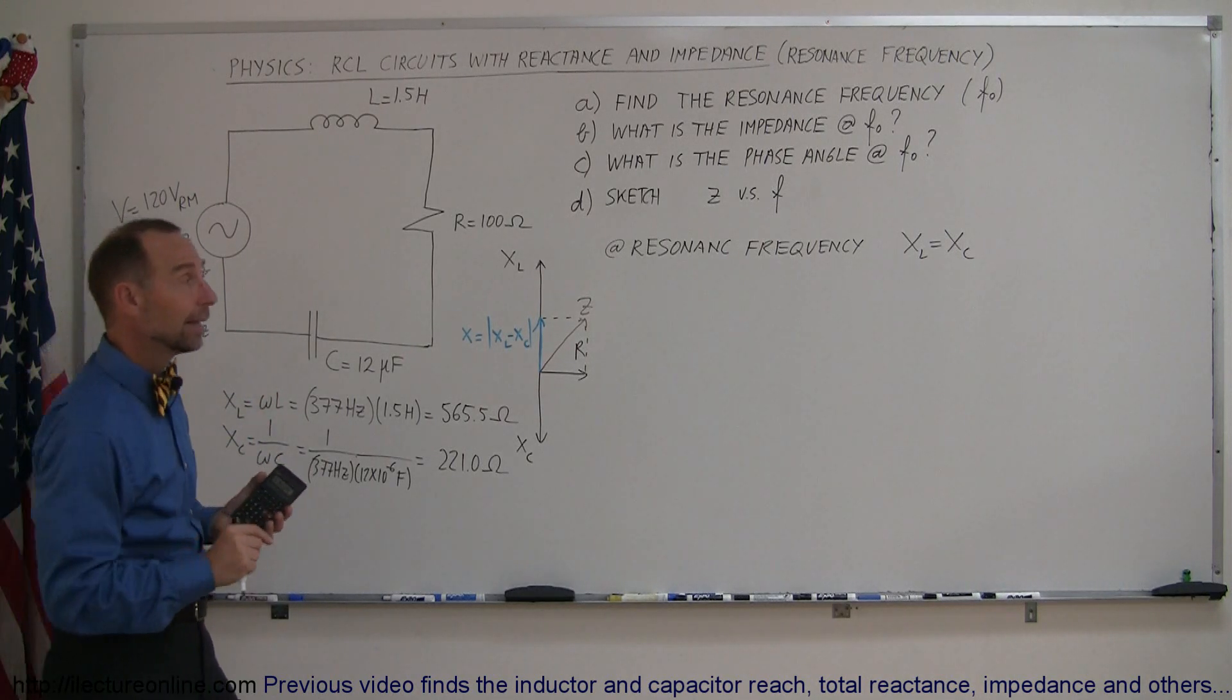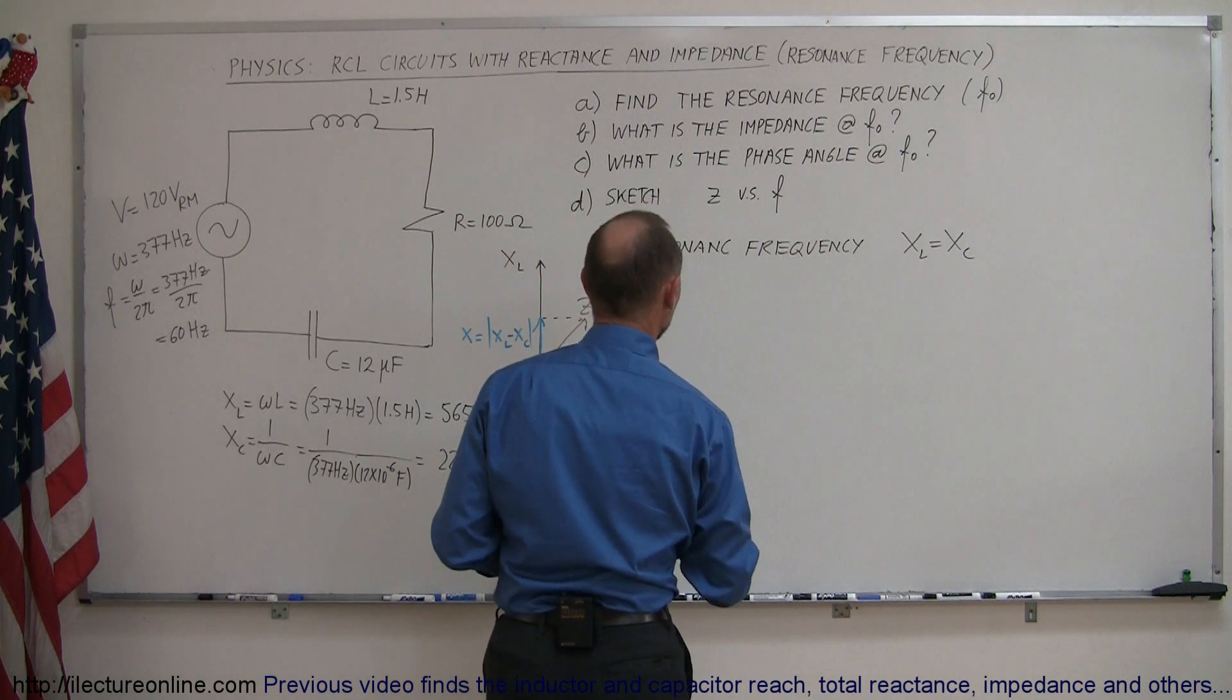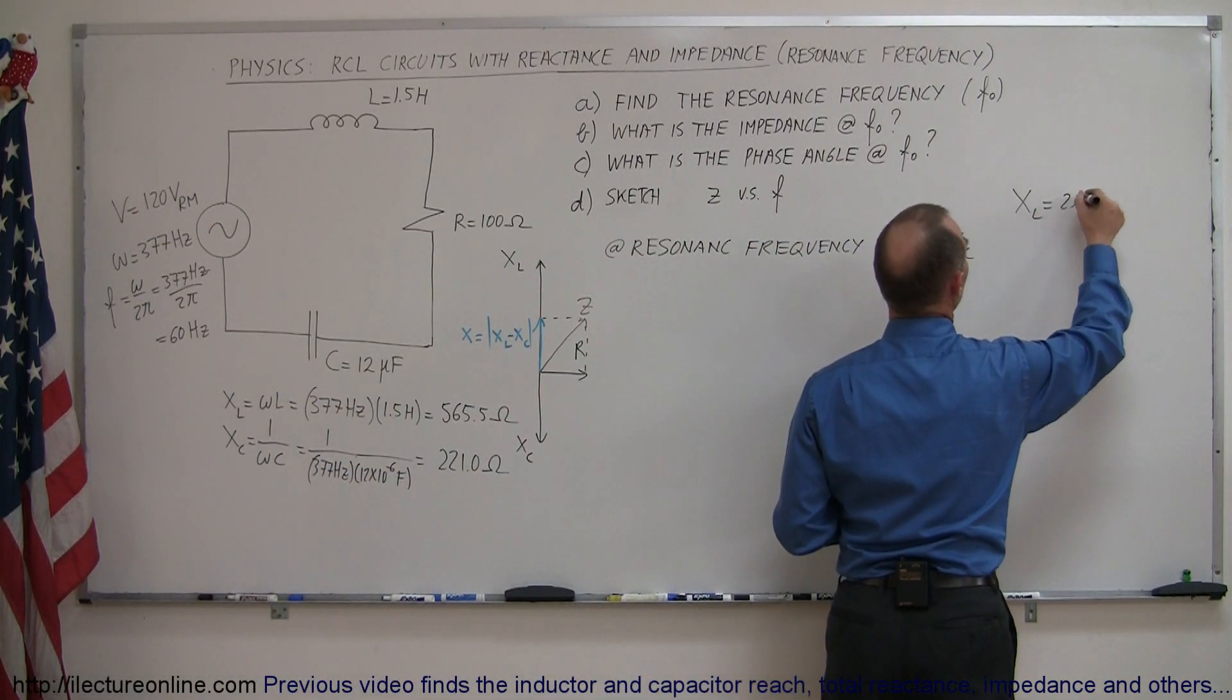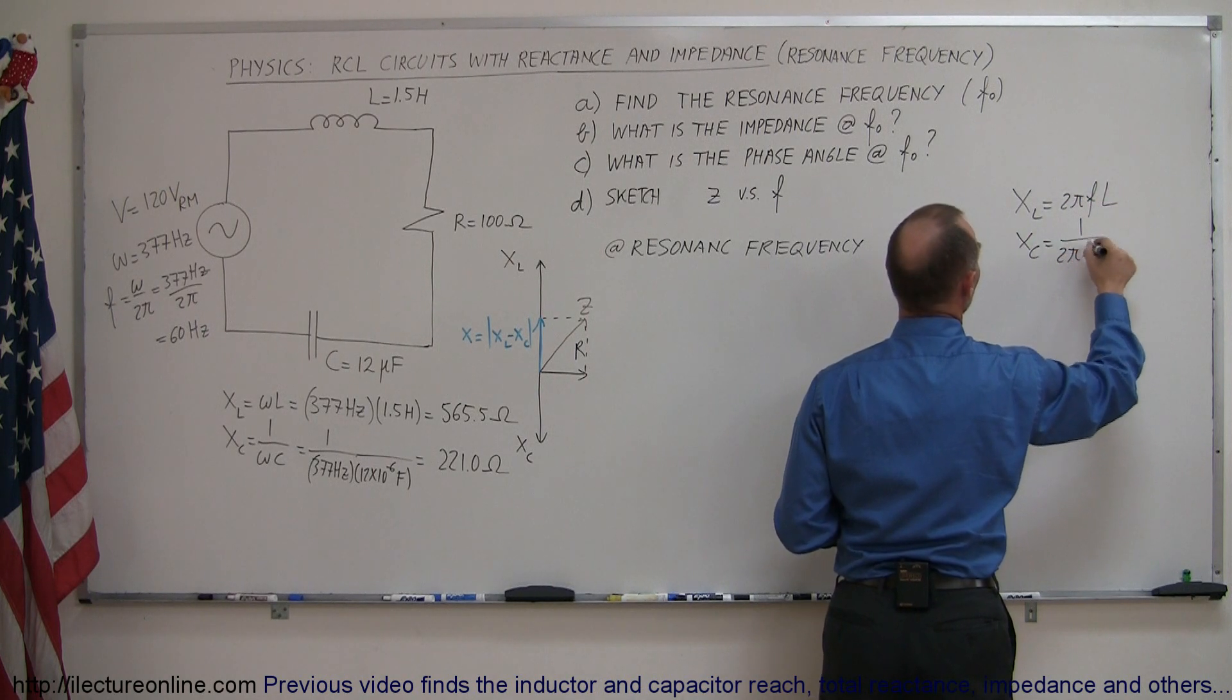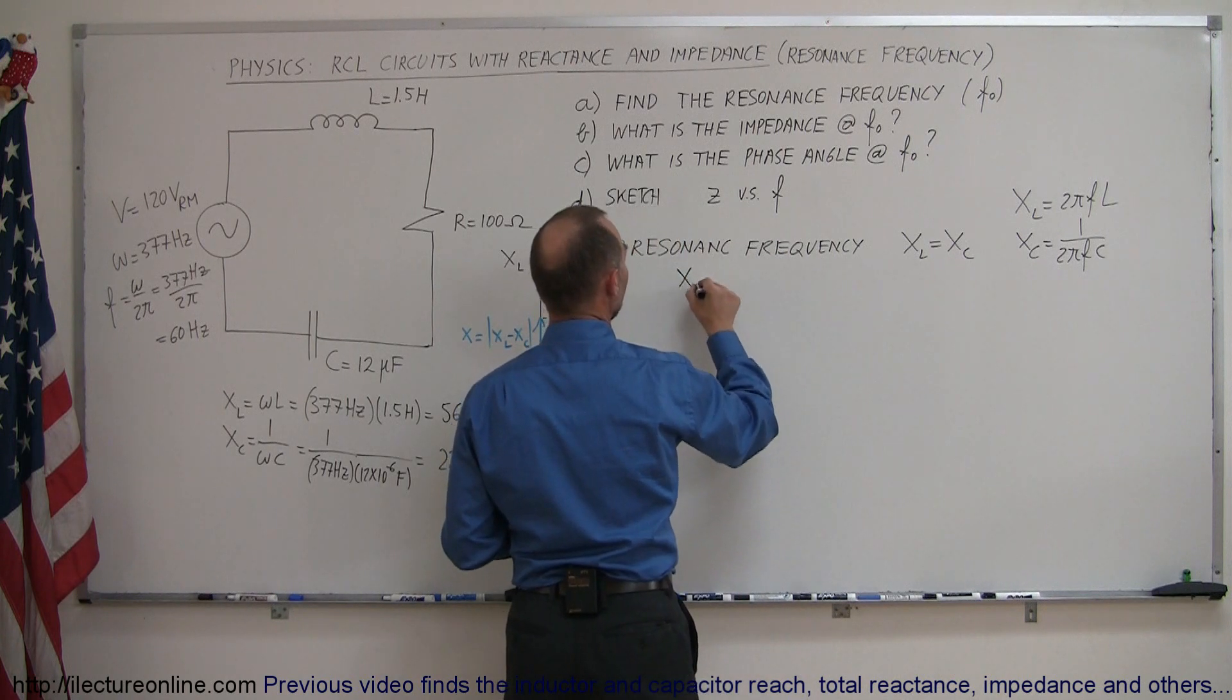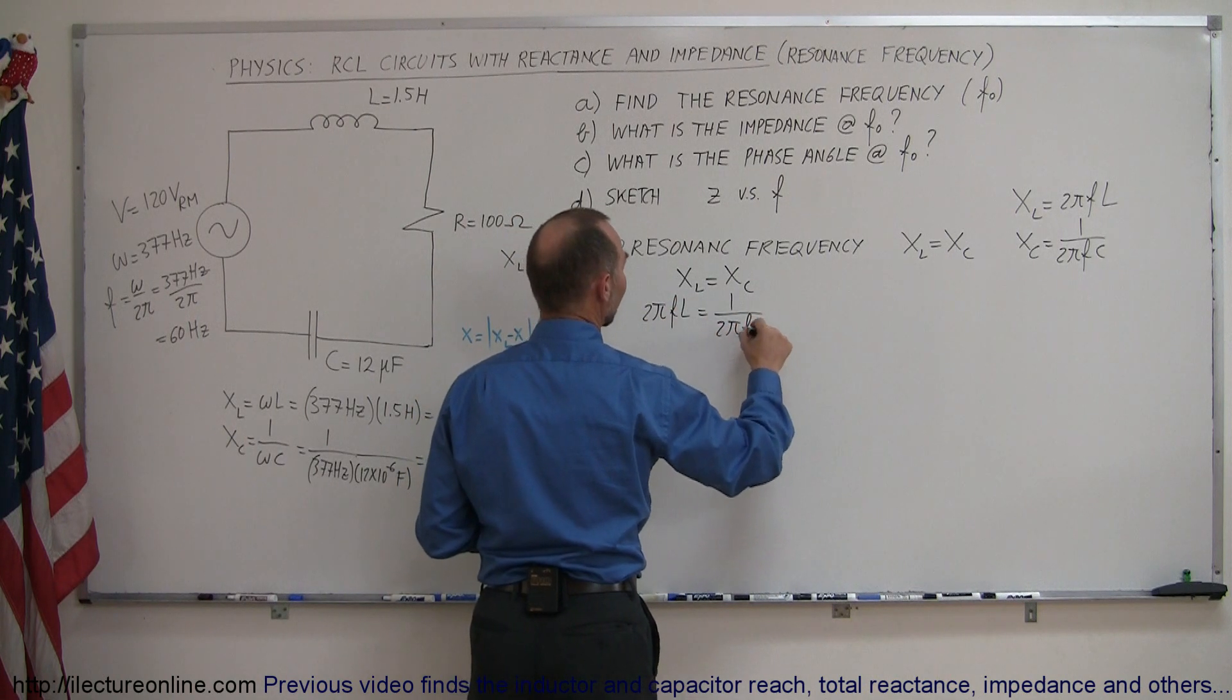An easy way to do that is to say, well, since these two have to be equal to each other, let's set them equal to each other and solve for F. So since X sub L is ω sub L, we can also write X sub L is equal to 2π F L, and X sub C is equal to 1 over 2π F C. So instead of writing ω we can write 2π F. Let's plug that in for this equation. So if X sub L equals X sub C, we can then say that 2π F L is equal to 1 over 2π F C.